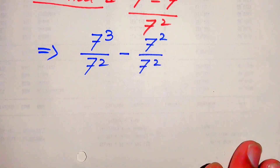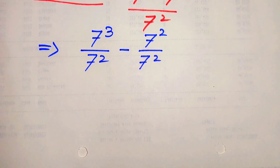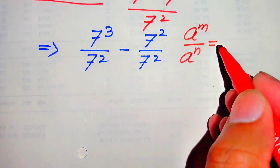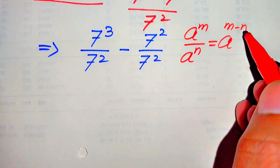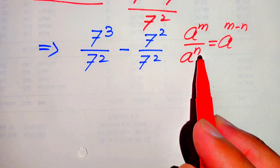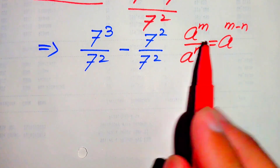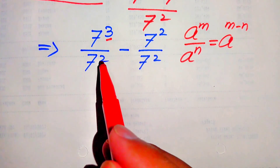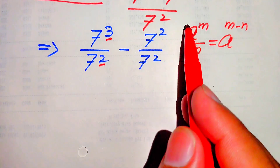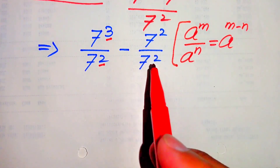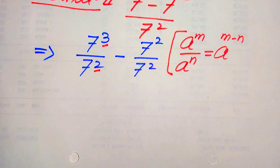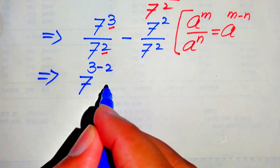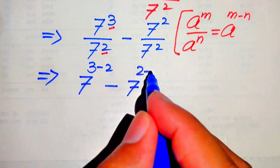In the second method we use the exponent law: a to the power of m divided by a to the power of n equals a to the power of m minus n. We move the lower exponent toward the higher exponent. Comparing the two exponents, the lowest is 2 and the highest is 3, so we apply this law to both terms, giving 7 to the power of 3 minus 2, minus 7 to the power of 2 minus 2.